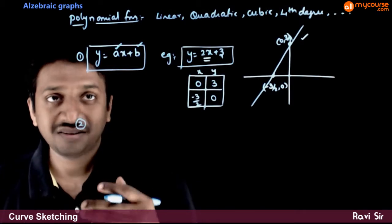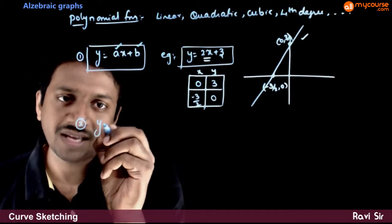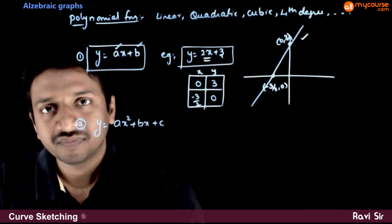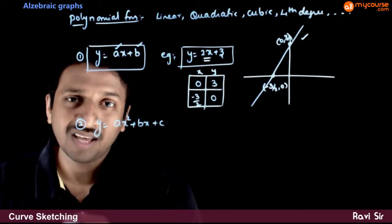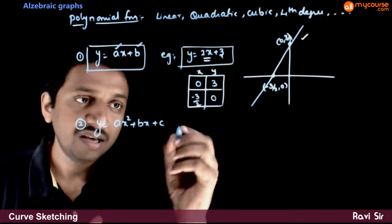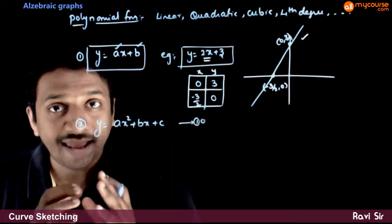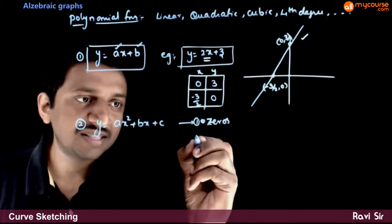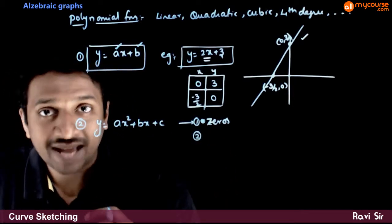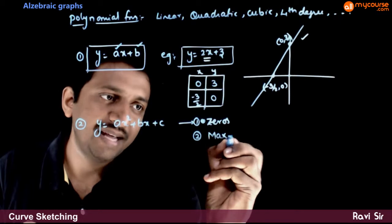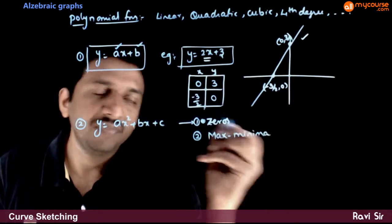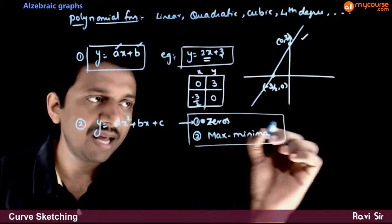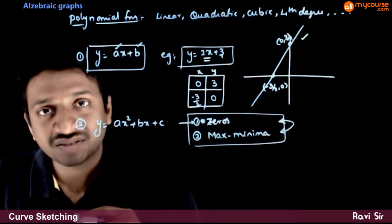Next, the next easiest polynomial to draw is a quadratic polynomial: y is equal to ax squared plus bx plus c. The higher degree polynomials can be analyzed in two different ways. The first type of analysis is analysis using the zeros of the polynomial, and the second is analysis using maxima and minima. Sometimes we try to do both of these simultaneously.